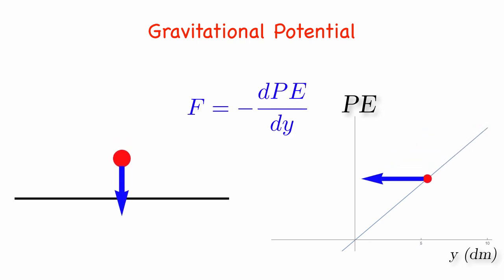its gravitational potential energy is converted to kinetic energy. In terms of forces, there is a constant downward force on the ball from the gravity of the Earth. That constant force accelerates the ball downward, and the ball travels faster and faster.